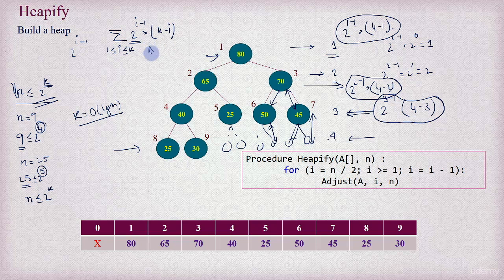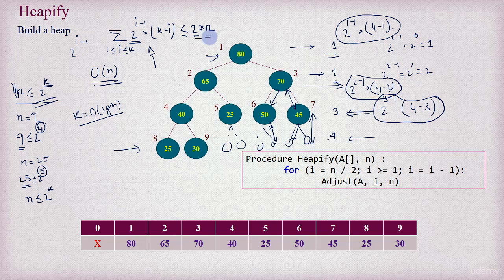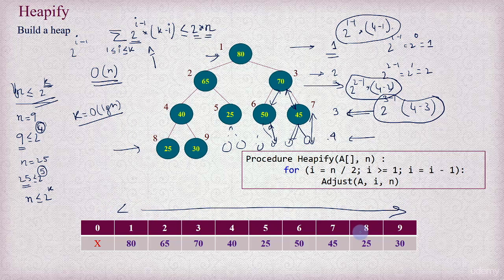If we do the mathematics to find this sum, it turns out to be less than or equal to 2 times n. So the total number of operations for heapify is big O of n. The heapify operation takes linear time — if you have n elements in your array, building the heap in place takes order of n time. The worst case complexity is big O of n, which is amazing.